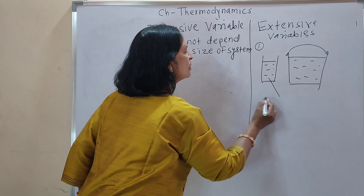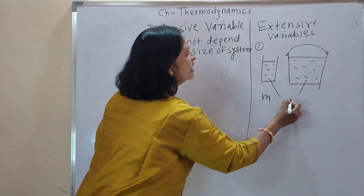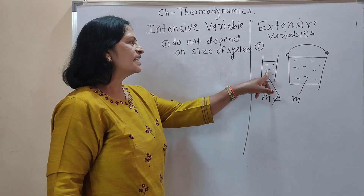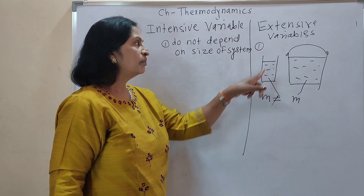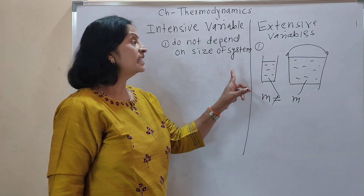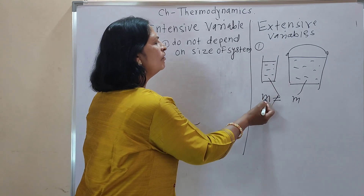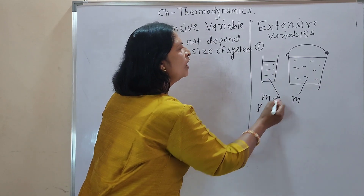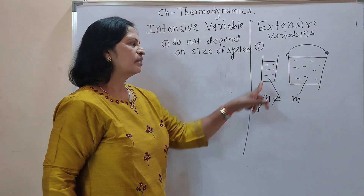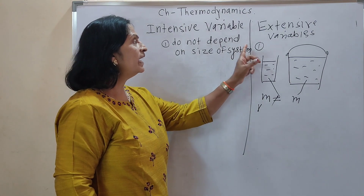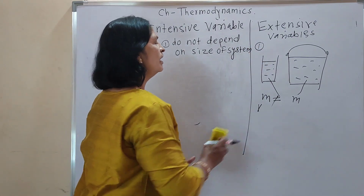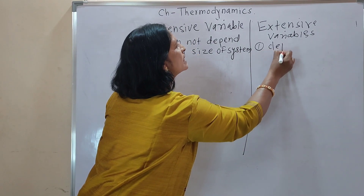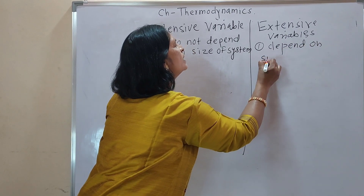Now consider extensive variables. Take a glass of water and a bucket of water. The mass of the glass of water and the mass of the bucket of water are not equal — this mass is small and that mass is large. Means mass is a variable that depends on the size of the system. Similarly, the volume of the glass is small and the volume of the bucket is large. So mass and volume depend on the size of the system.